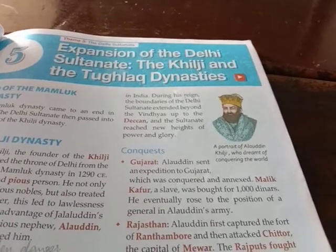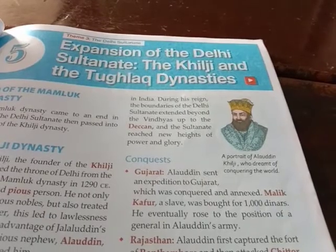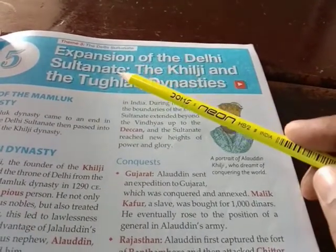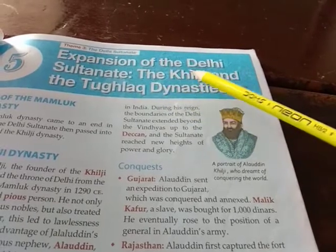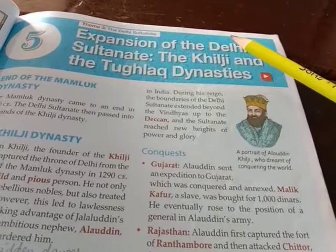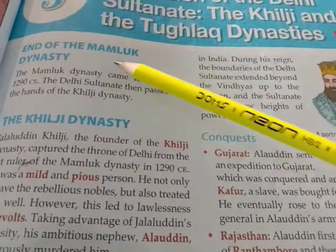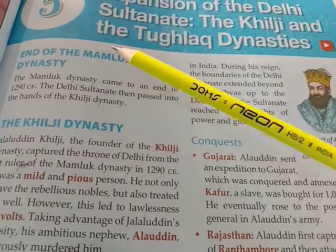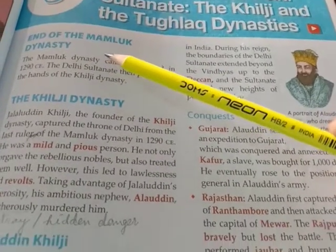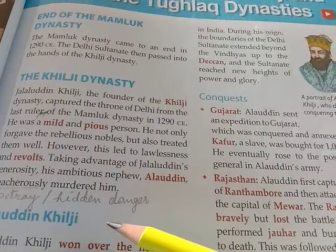Good morning, students of Class 7. Today we will continue our discussion of History Chapter 5: Expansion of the Delhi Sultanate — the Khilji and Tughlaq dynasties. In our last class, we discussed the end of the Mamluk dynasty, which means the Slave dynasty, and then discussed the Khilji dynasty.